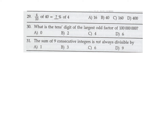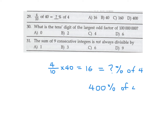4/10 of 40 is what percent of 4? First calculate 4/10 of 40: that's 16. Then 16 is what percent of 4? You have to quadruple 4 to get 16, so it's 400 percent. That is D for number 29.